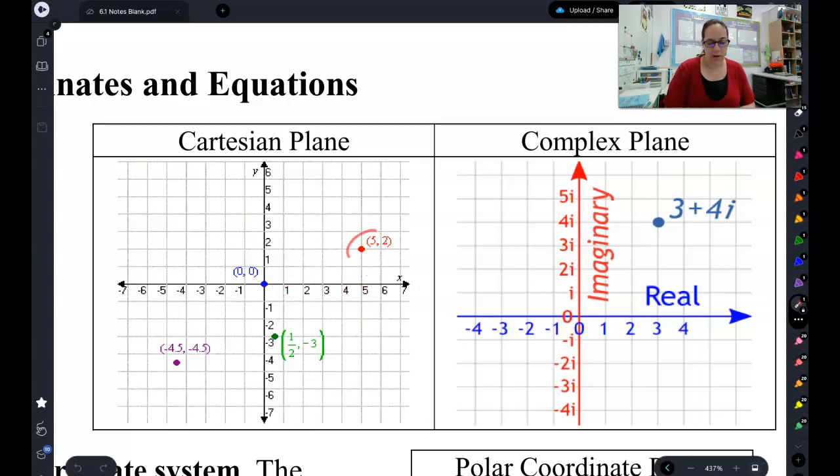So 5, 2 would be right there. 0, 0 right there. 1/2, negative 3, right there. You've been plotting those for forever.